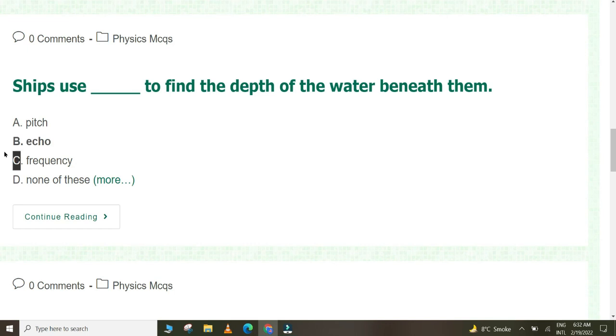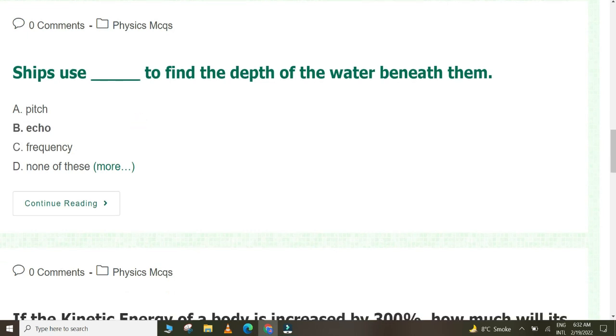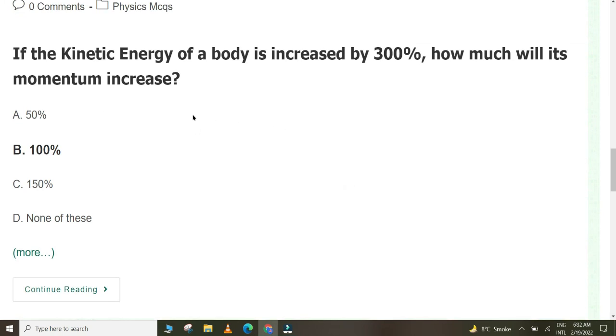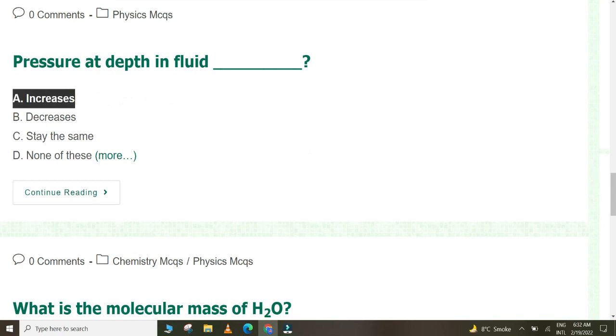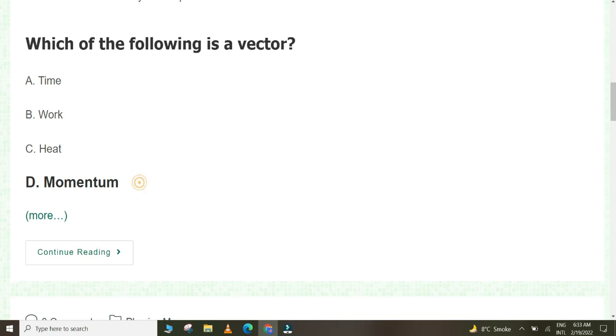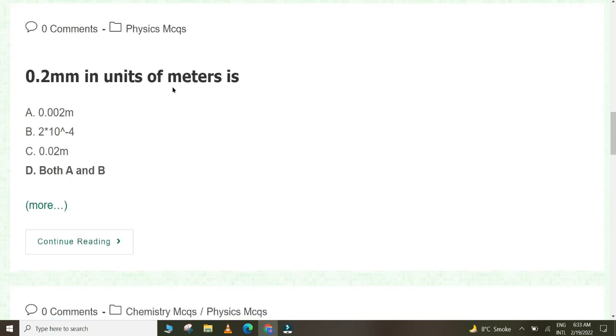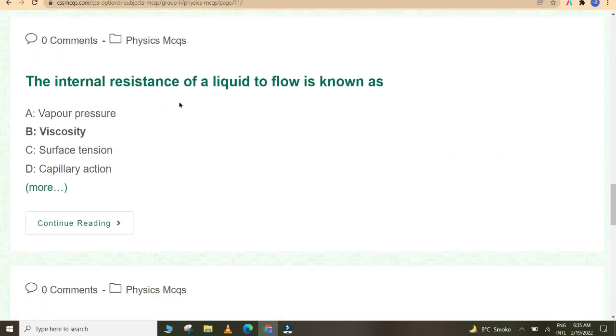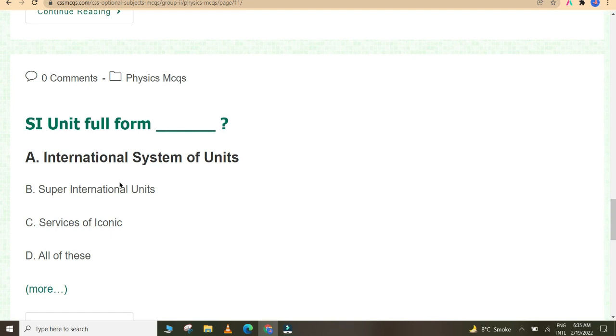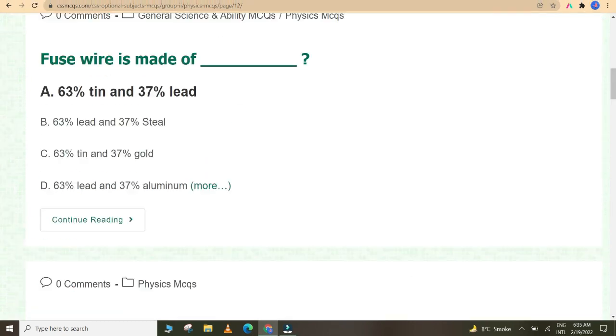What is the dimension of lambda wavelength? M0 L1 T0. Ships use echo to find the depth of the water beneath them. If the kinetic energy of the body is increased by 300%, how much will its momentum increase? 100%. Pressure at depth in fluid increases. Which of the following is a vector? Momentum. 0.2 millimeter in units of meters is 0.0002 meter. Area is a scalar quantity because it has no direction. The internal resistance of a liquid to flow is known as viscosity. SI unit full form is International System of Units. Fuse wire is made up of 63% tin and 37% lead.